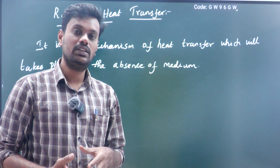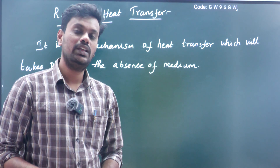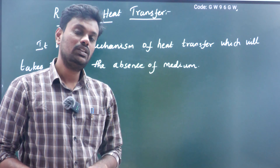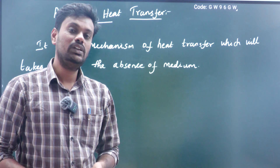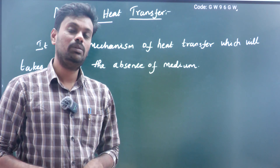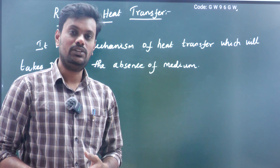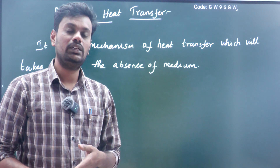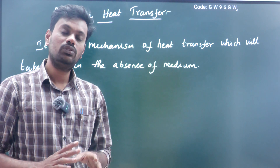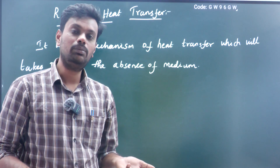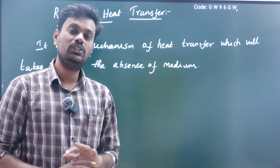The best example I have already discussed is the sun — it is the best example for radiation heat transfer. The definition: radiation is the mechanism of heat transfer in which heat transfer takes place in the absence of any medium; it can even take place in a vacuum. From the sun to the earth, heat is radiating with no medium in between.